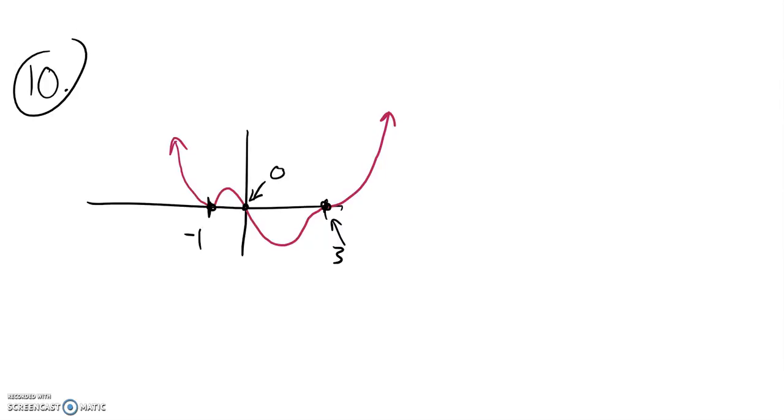Notice locally here it looks like a little local parabola, so this probably has a multiplicity of 2. This just crosses through, so this probably has a multiplicity of 1. And this looks like a little local cubic right there, so this has a multiplicity of 3.